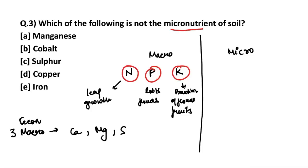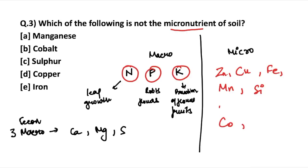Coming to micronutrients: the major micronutrients are zinc, copper, iron, and manganese. Don't get confused — magnesium is a secondary macronutrient, while manganese is a primary micronutrient. Silicon is also a micronutrient. Secondary micronutrients include cobalt and boron. Sulfur is actually the secondary macronutrient, so the answer to 'which is NOT a micronutrient' is sulfur. Copper and iron are both micronutrients.